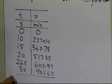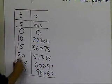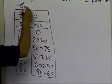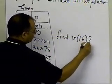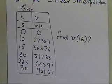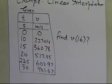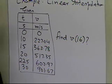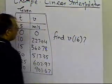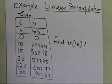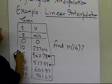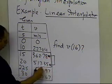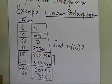Given this data, you are asked to find the value of the velocity at t=16. Since we are given six data points but are only conducting linear interpolation, we're going to choose the two closest points to 16, which appear to be 15 and 20.